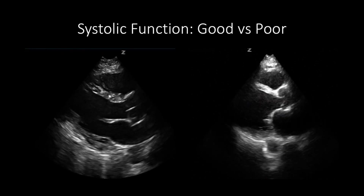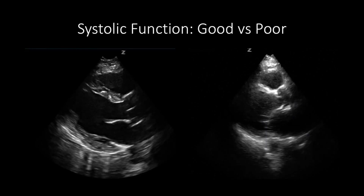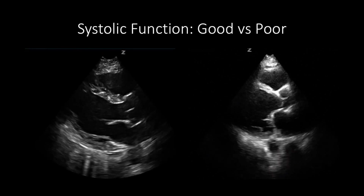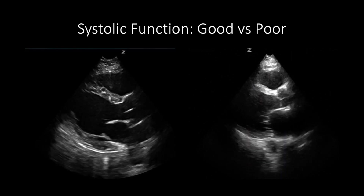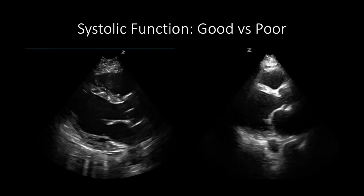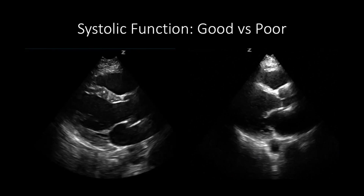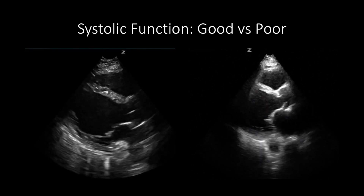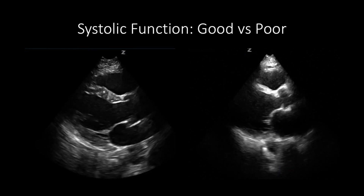When looking at systolic function, we want to do it globally, meaning that we want to make sure that we look at all the important structures, such as the mitral valve, the septal and inferior wall contractility, as well as the left ventricle chamber size change during the cardiac cycle. This is important because if those structures are damaged, they can't be used for visually assessing systolic function.